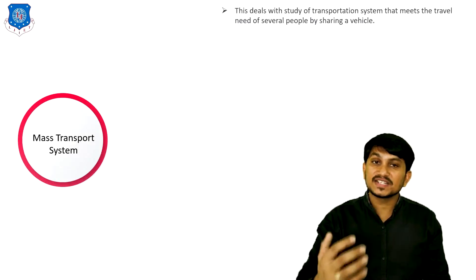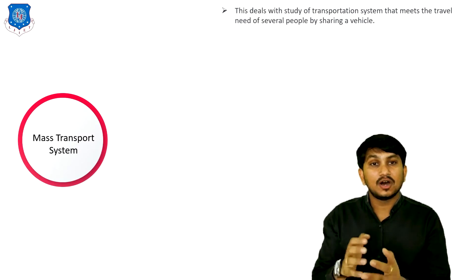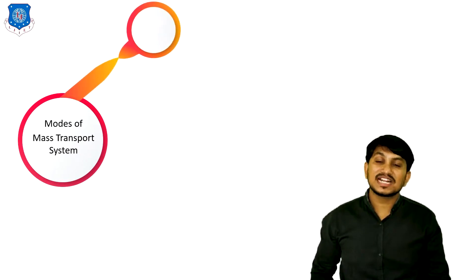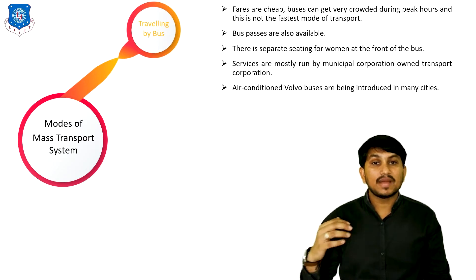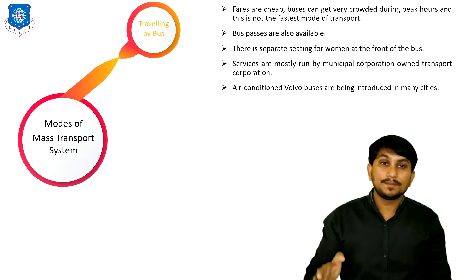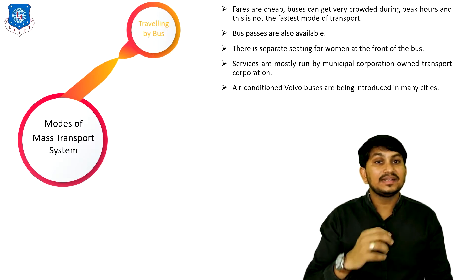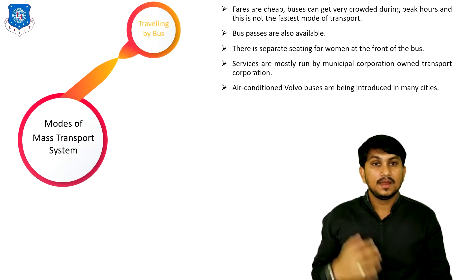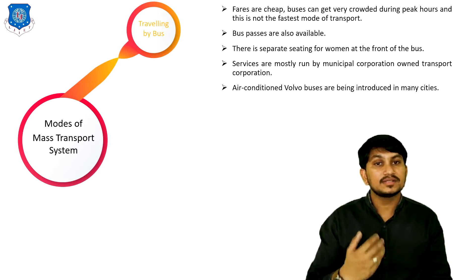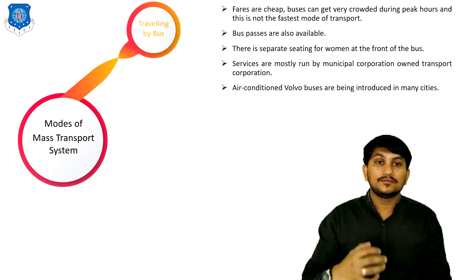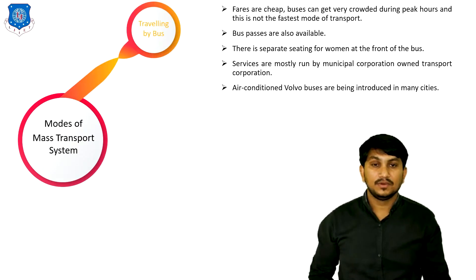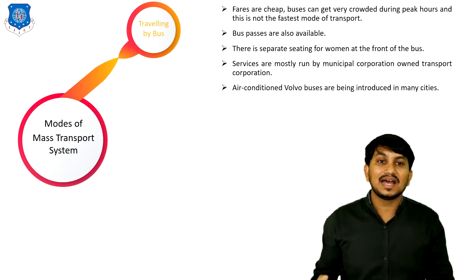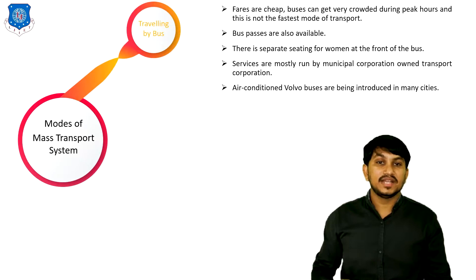Mass Transportation System deals with the study of transportation systems that meet the travel needs of several people by sharing a vehicle. There are various modes of transportation. First is travelling by bus, in which fares are cheap. Buses can get very crowded during peak hours and are not the fastest mode of transportation. Buses are available in particular cities, with separate seating for women at the front. Services are mostly run by municipal corporations, and Volvo buses are being introduced in many cities in India.